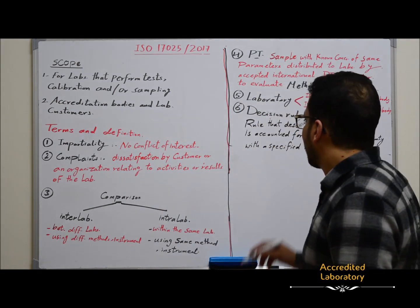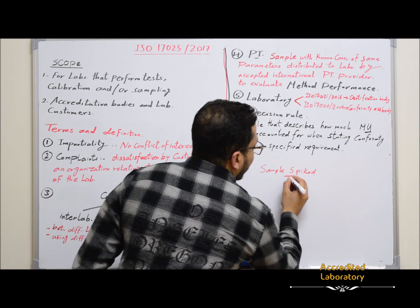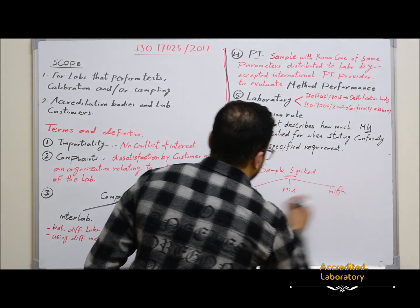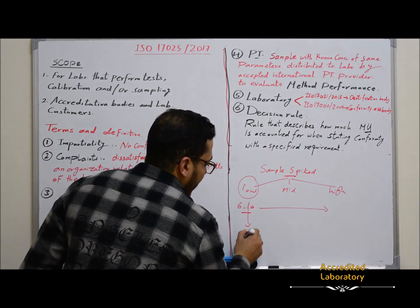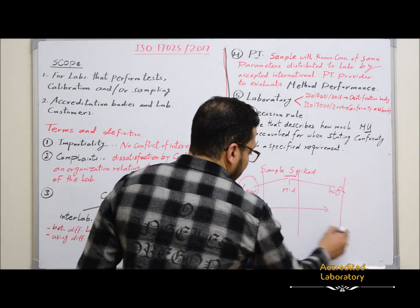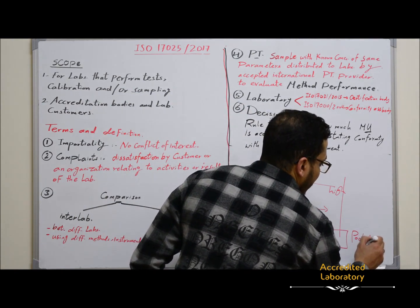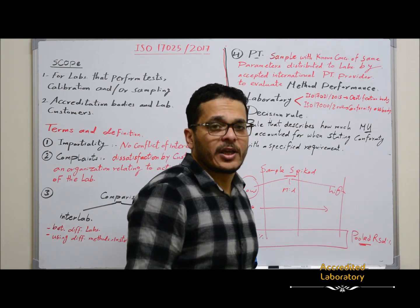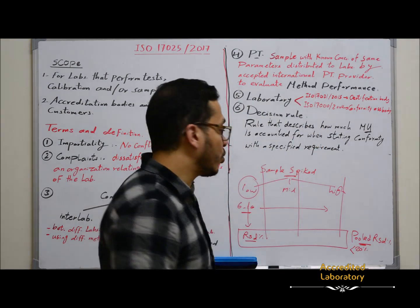Intra-lab comparison is done by analyzing one sample spiked at different levels — low, mid, and high — making six to ten replicates from each level, then calculating the relative standard deviation for each level. Take the average between relative standard deviations and calculate the variance between all three levels using pooled relative standard deviation. This will be explained in detail in the method validation course. It should be less than 20% to be accepted internationally.